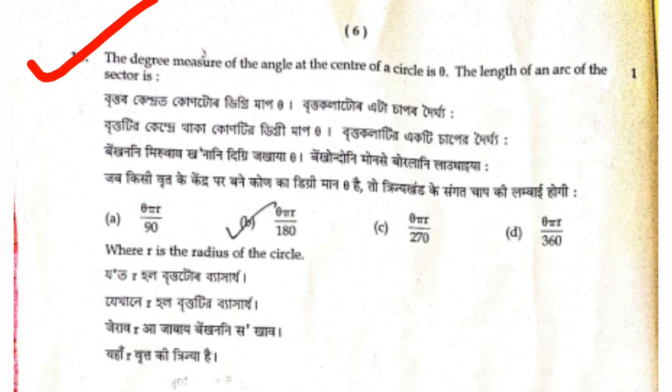For question 9, option B: theta times pi times r divided by 180. Option C: theta times pi times r divided by 270. Option D: theta times pi times r divided by 360. The right answer is B, theta pi r divided by 180. For question 10, the answer is also B: theta pi r divided by 180.